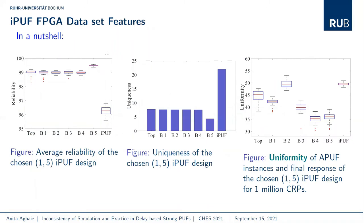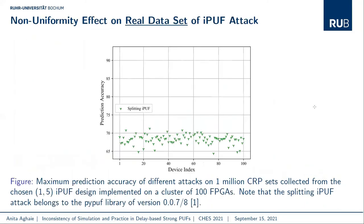Using the FPGA cluster, we evaluated the chosen design on all 100 devices while collecting 1 million CRPs per device. We present the evaluation of our chosen 1×5 IPUF design in terms of reliability, uniqueness, and uniformity. This design has high reliability but not ideal uniqueness, due to small process variation in FPGA implementation. The uniformity of individual ARPUF instances follows an approximately normal distribution in the range of 31%–54%, while the final IPUF response uniformity remains in a good range of 45%–55%.